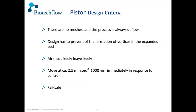The next challenge was the piston. In this column, at this diameter, it was for pilot study and phase 3 production. We used a piston to find out what bed height we needed. There are no meshes and the process is always upflow. If the column with a stirrer got a vortex, the tungsten carbide media left the column and went straight out of the top, sticking to all the pipework in the GE skid. To stop the formation of a vortex, air must leave freely and the piston must move 1 metre at 2.5 millimetres per second. Fail-safe is a system of relief valves.